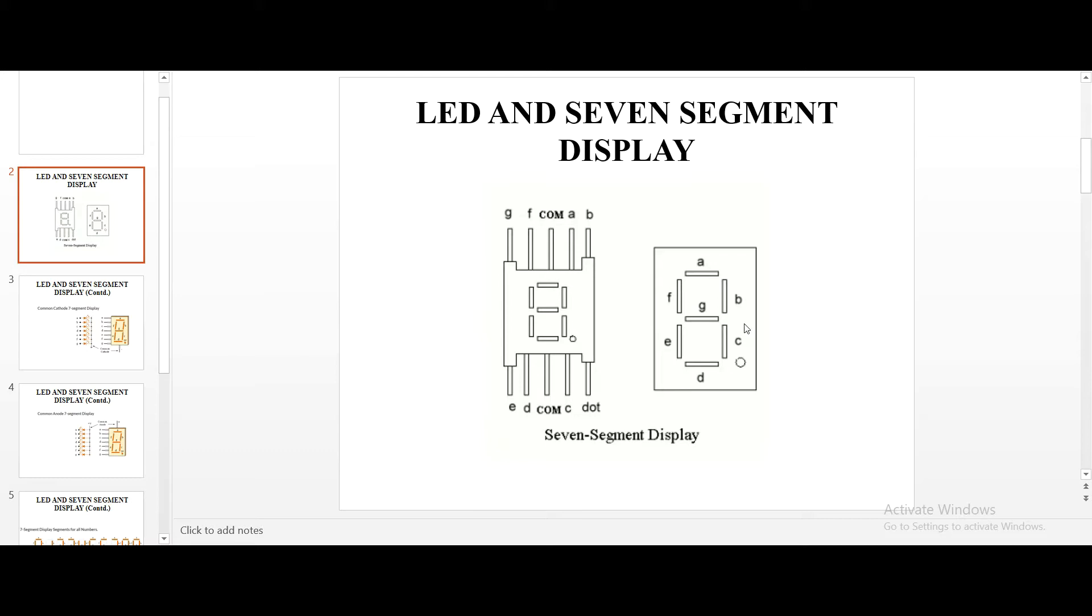Like that, these are the variations about which we can obtain various digits. If we combine 2 or 3 7 segment displays, we can obtain 2 digits or 3 digits.